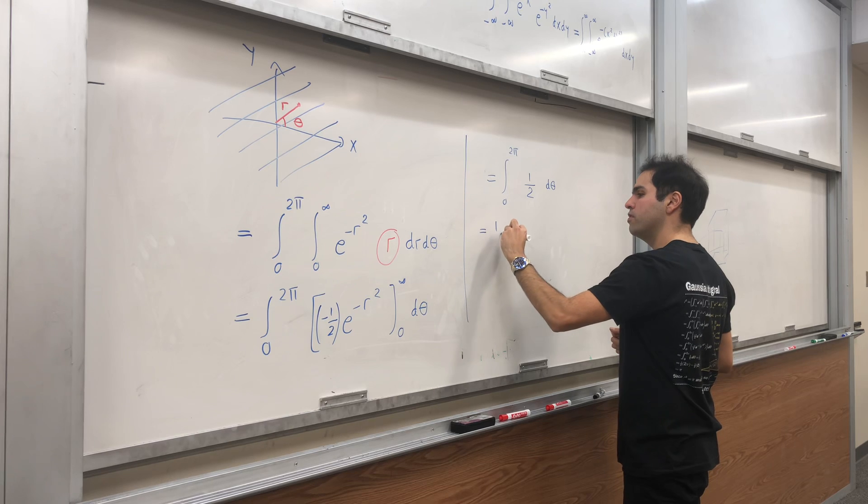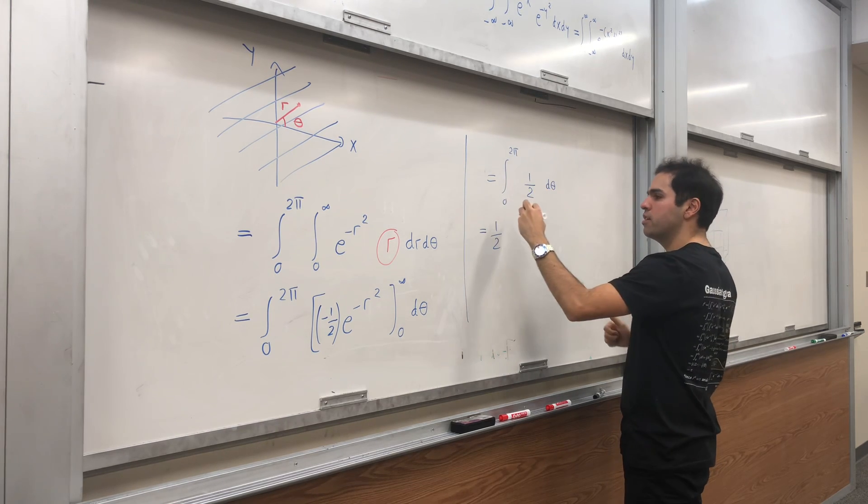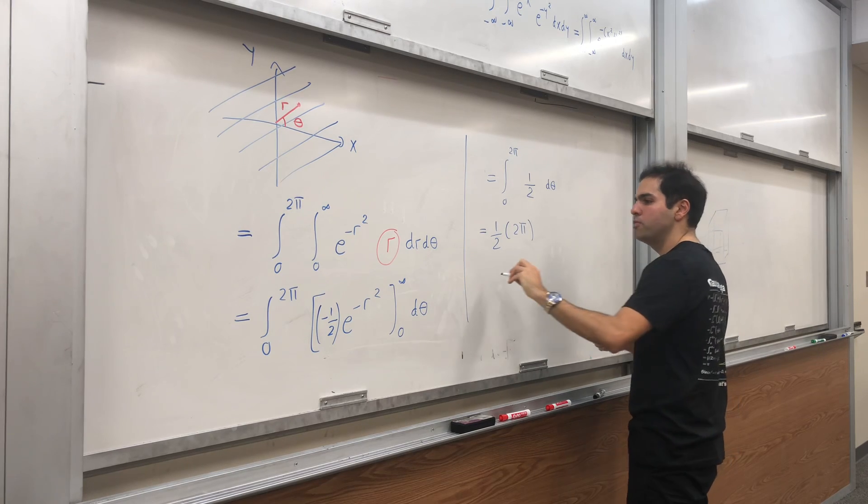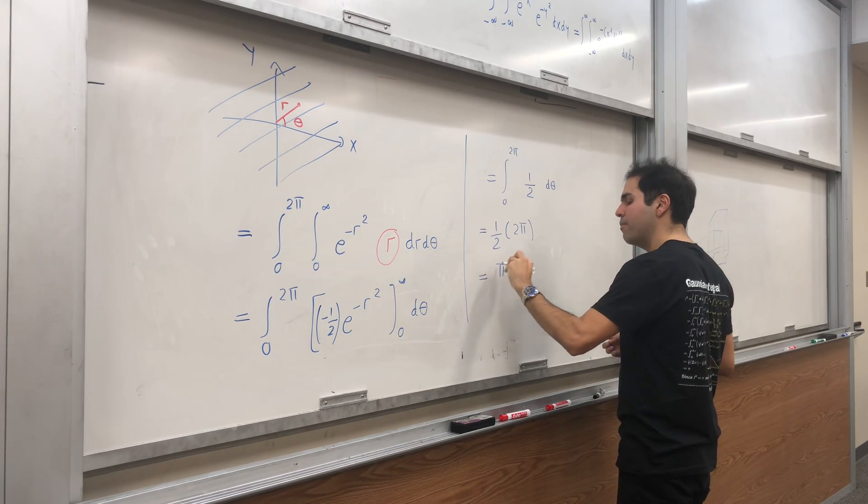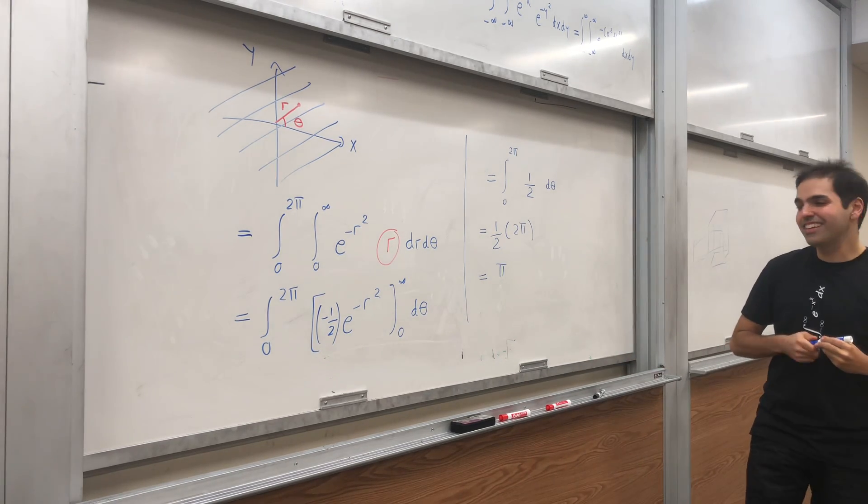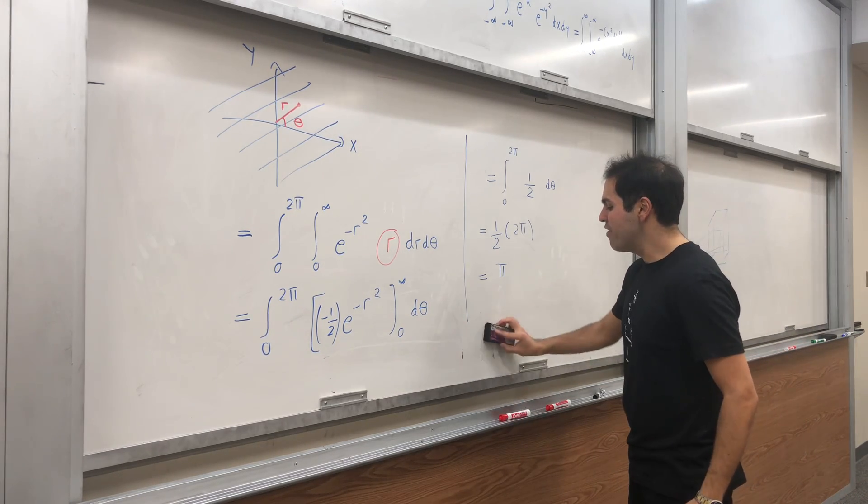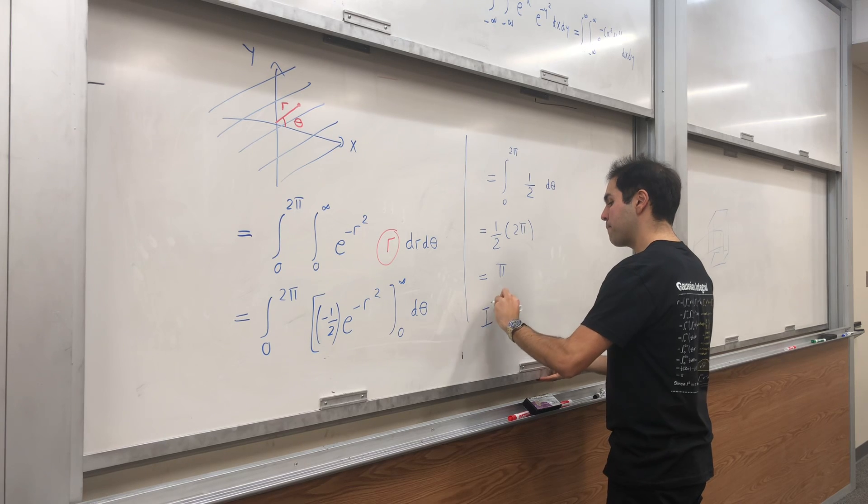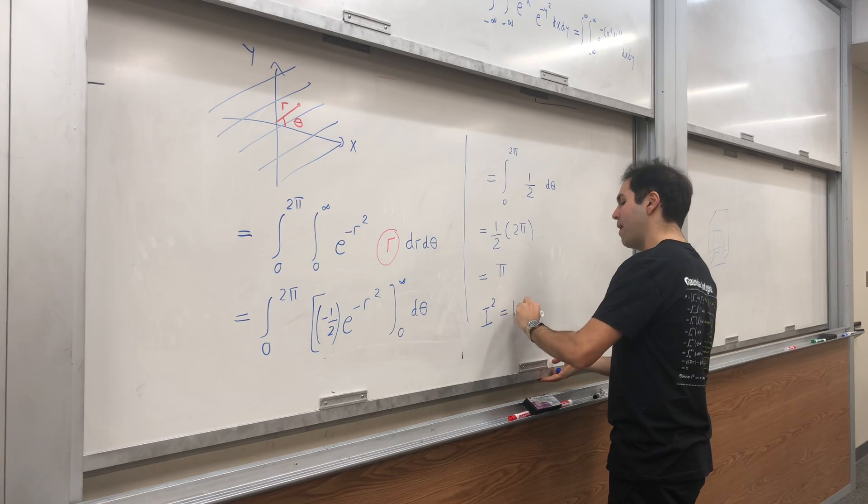Which becomes, if you want, 1/2 θ from zero to 2π, which just becomes 1/2 times 2π, and we get π. Delicious, delicious, delicious, delicious π. Now what have we found so far? We found that I² equals π.